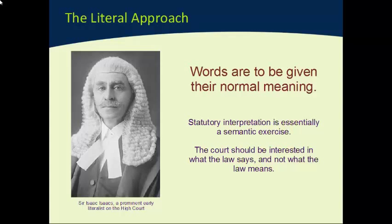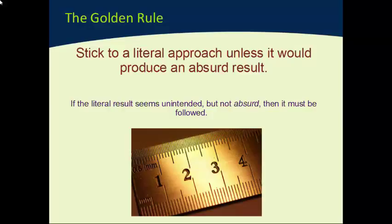The literal approach led to what is called the Golden Rule. The Golden Rule says if the literal result seems unintended but not absurd, it must be followed. But if the literal reading of the words in the statute leads to an absurdity, then there is no need to produce that absurd result. The Golden Rule is basically saying let's stick with the literal approach but modify it a little to take some of the sharp edges off it. Even if the outcome is not what Parliament intended, if it's not absurd, we go with it.